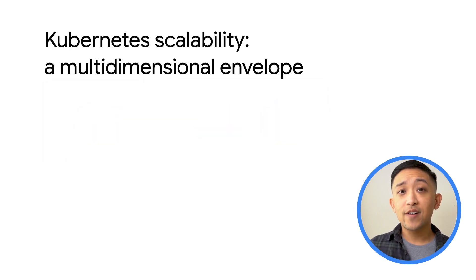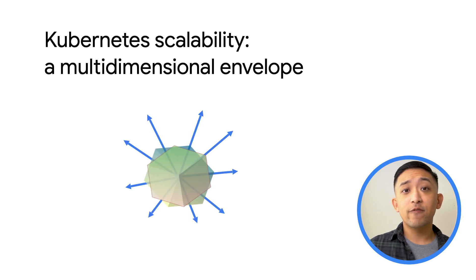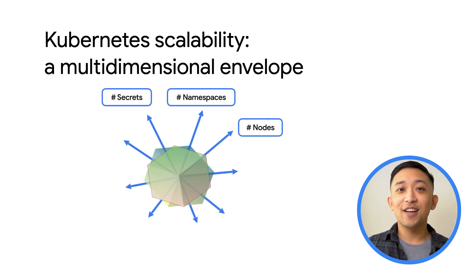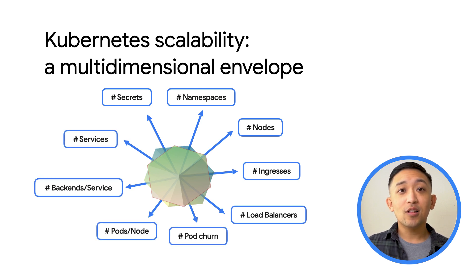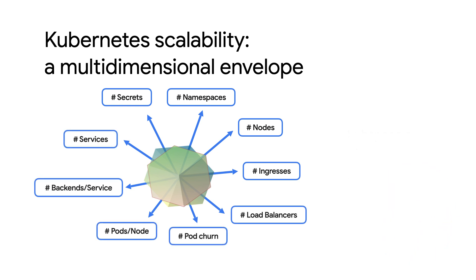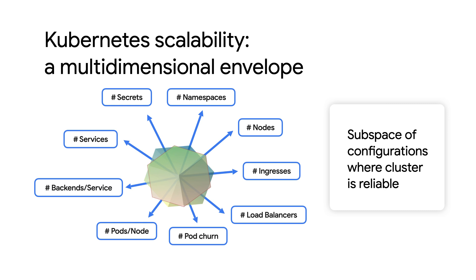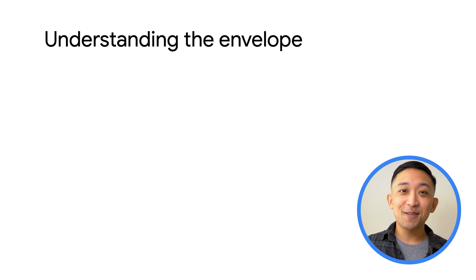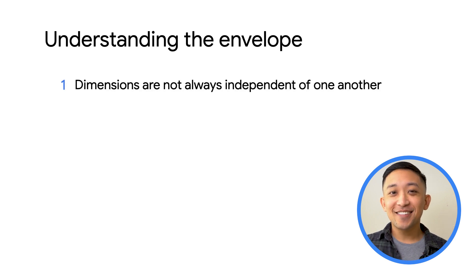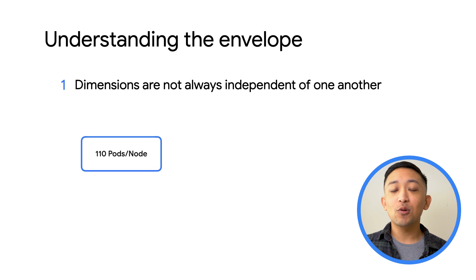Kubernetes scalability is defined by the special interest group focused on scalability as a multi-dimensional envelope. Within this envelope, your cluster will work and do so reliably. This envelope has configuration limitations at various dimensions — it could be the number of pods, the number of namespaces, the number of secrets. So when designing a cluster for large scale, it helps to understand how your cluster will fit within this envelope. Now, let's talk about how an envelope like this actually works.